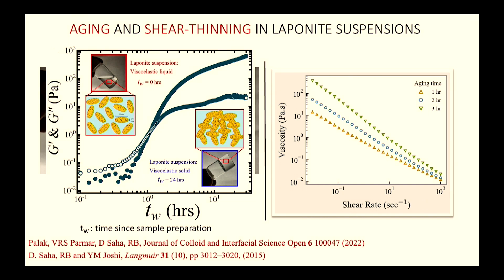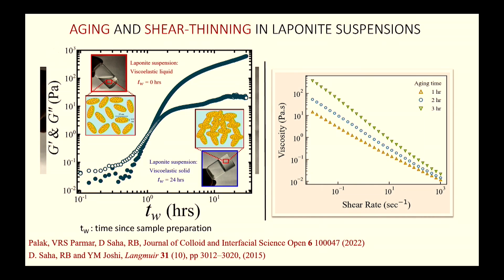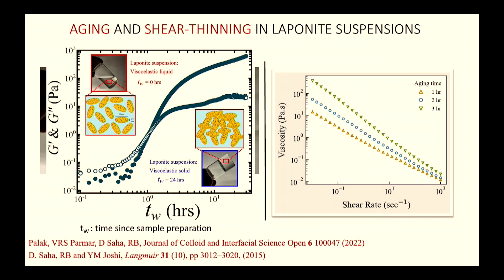Clay is also a shear-thinning viscoelastic material. Laponite suspensions aged to one, two, or three hours and then sheared in rotational rheometry show viscosity decreasing with shear rate. Laponite is used here as a model clay; this behavior applies to synthetic or natural clays. The two properties to exploit are time-dependent aging rheology and shear-rate-dependent shear-thinning rheology.